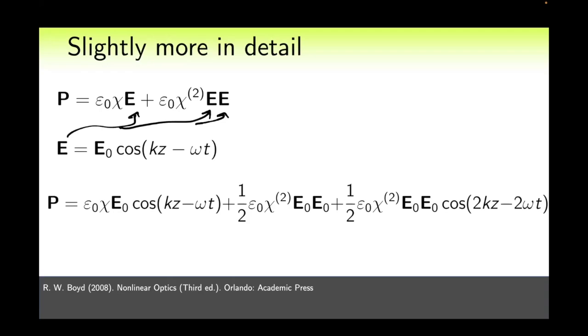After the substitution we get the expression written here in the third line. The first term here simply corresponds to the polarization that varies in the same way as the electric field at the same frequency. The second term corresponds to some constant polarization of the medium but does not depend on time. This is called optical rectification. But the third term shows that the cosine already depends on the doubled frequency and it is precisely this that corresponds to second harmonic generation.